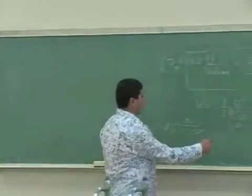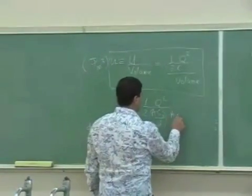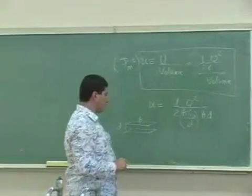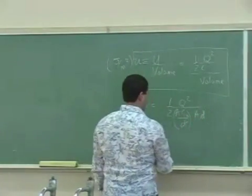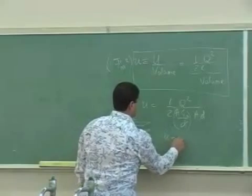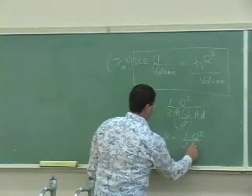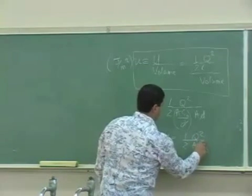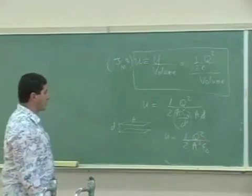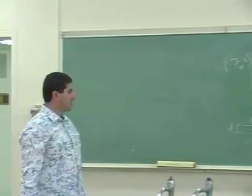So if I want to get the volume here, put the AD, and then the D and the D cancel, and we have half Q squared over A squared ε₀.